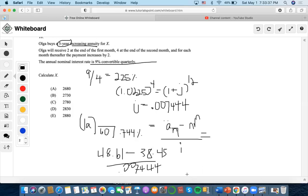So it would be 48.61 divided by 0.007444. So this would equal 1364.85, right? But how much is this level annuity increasing by? By 2. That's why we always put how much it is increasing by, and then we list out the level annuity formula. So we take this value, multiply it by 2, and we get 2729.7, which makes B the final answer.